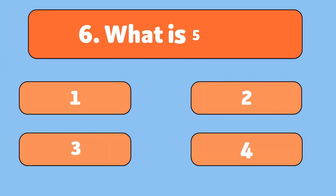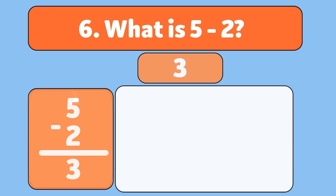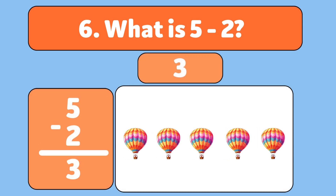What is 5 minus 2? The answer is 3. We start with 5 hot air balloons and let 2 float away. Let's count: 1, 2. We have 3 hot air balloons left.